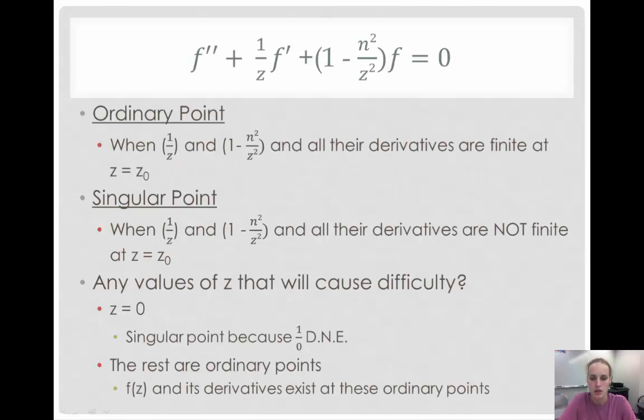Now, we have to look at a few definitions. First, the ordinary point. An ordinary point is when one over z and one minus n squared over z squared and all of their derivatives are finite at some point z equals z sub zero.